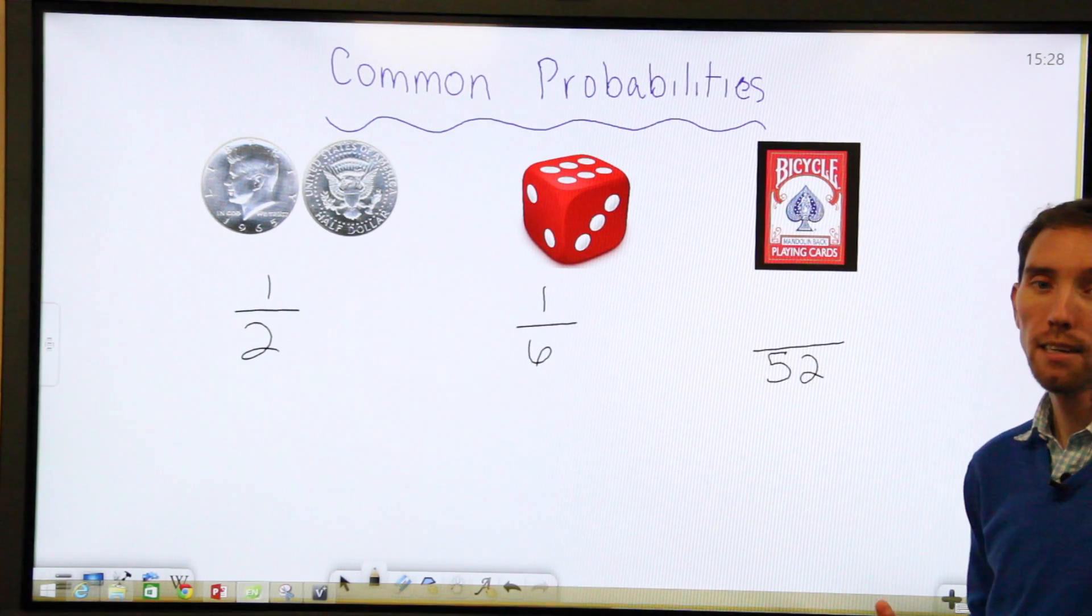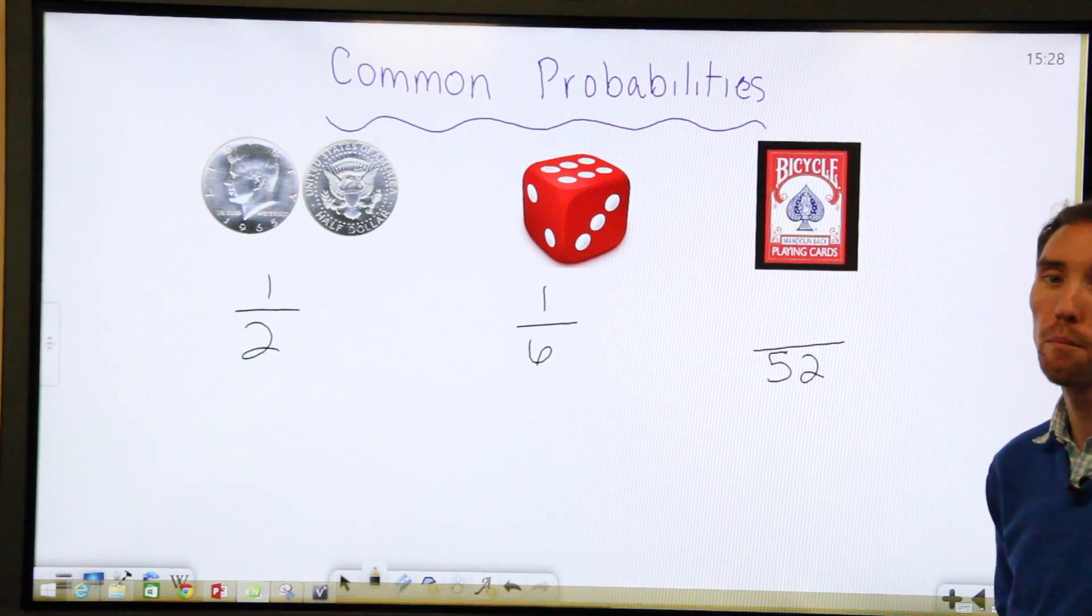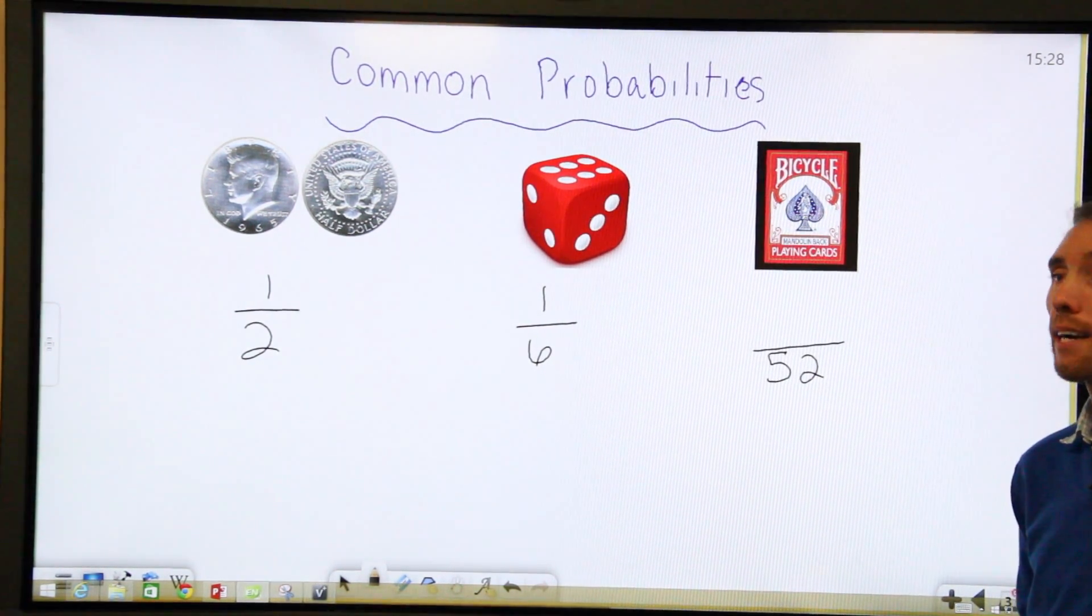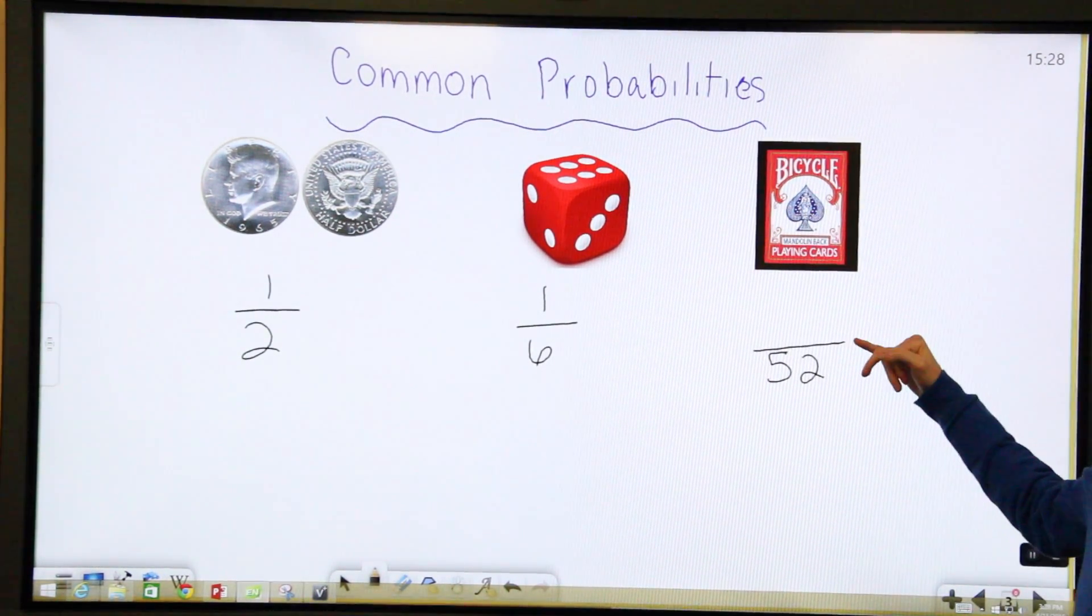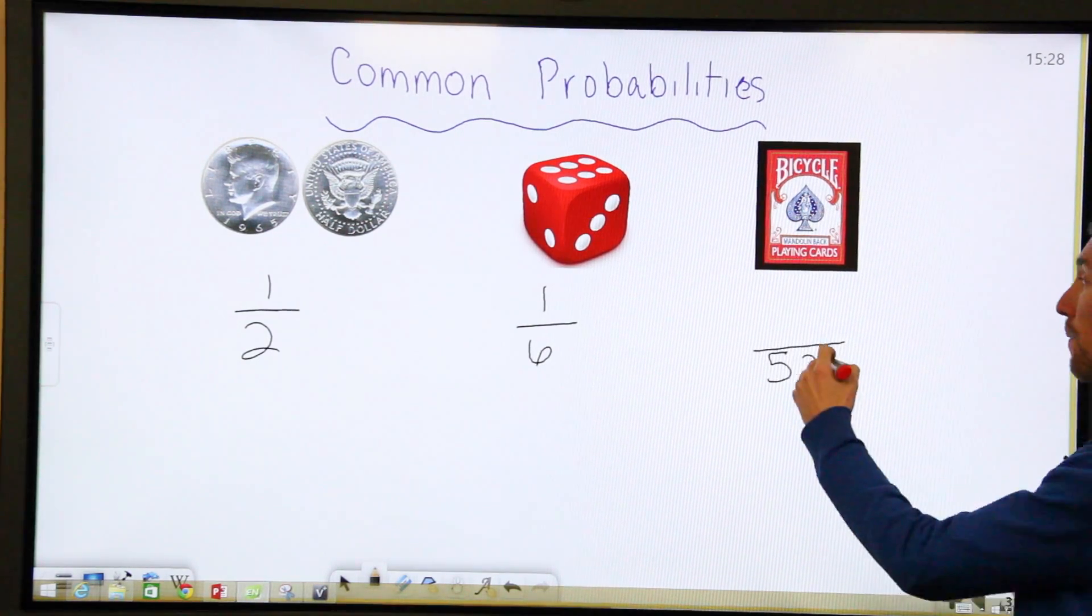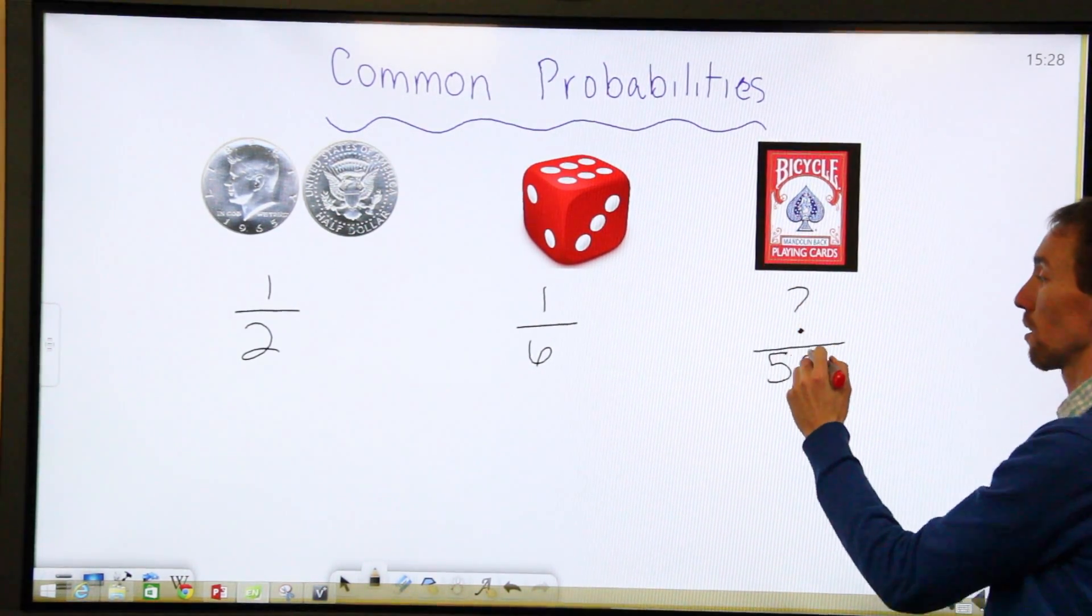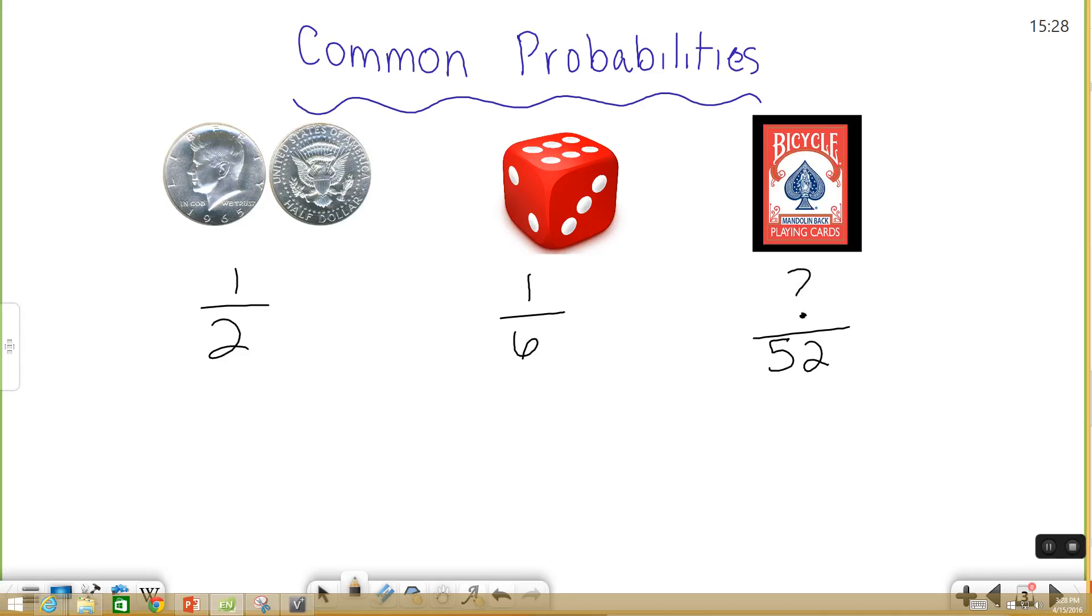You could be asked, what's the probability of picking a certain number, like a nine, out of the deck, or a red card, things like that. So however many of those that you're looking for is the number that goes on top. So I'm going to leave this as a question mark, because it can really be a lot of different things. The key is the bottom number is 52.